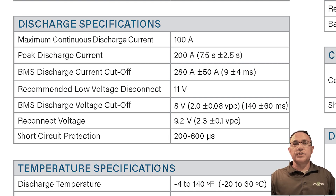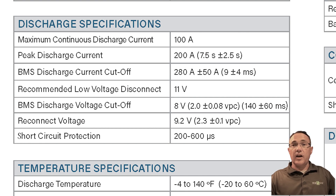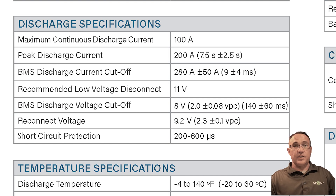Recommended low voltage disconnect. This is the voltage we recommend disconnecting at to ensure the BMS does not go into protection mode and your devices remain powered. BMS discharge voltage cutoff and reconnect voltage: this is the low voltage point at which the battery will enter protection mode. If the BMS detects the entire battery is less than 8 volts or any individual cell below 2 volts, it opens the circuit to protect the health of the battery. To recover from this condition, charge the battery and the BMS will reconnect when the voltage reaches 9.2 volts.